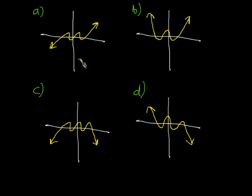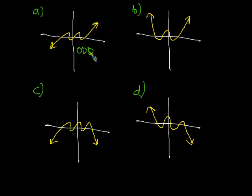Hopefully you identified this first graph as the graph of a polynomial function that — it looks a bit like a line. Lines are first degree or odd degree polynomials, so because it looks like a positive sloping line, this must be related to an odd degree polynomial — so odd degree — and we're not worried about exactly what power, but it must be an odd power, and it must have a positive leading coefficient.